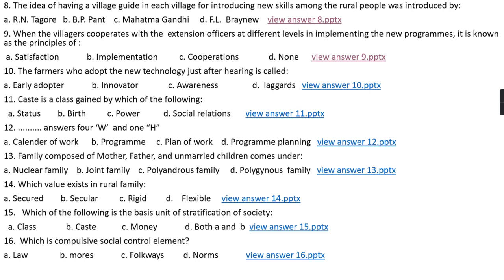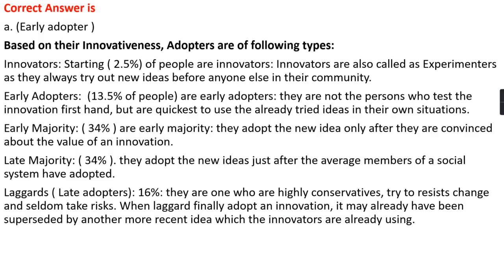Question number ten: The farmer who adopts new technology just after hearing about it is called option A, early adopter; option B, innovator; option C, awareness; option D, laggards. The right answer is option A, that is early adopter. On the basis of innovativeness, adopters are of the following types. First is the innovator, which is the starting 2.5 percent of people. Innovators are also called experimenters as they always try out new ideas before anyone else in their community.